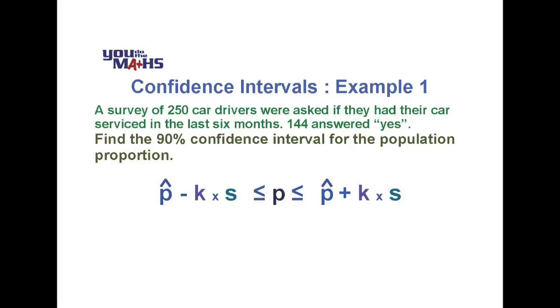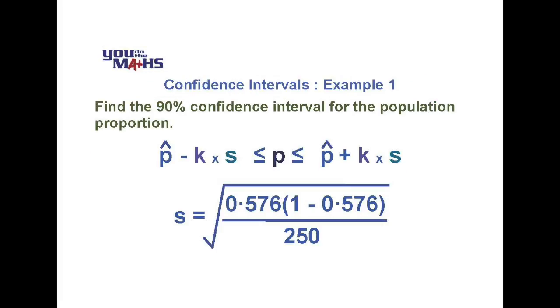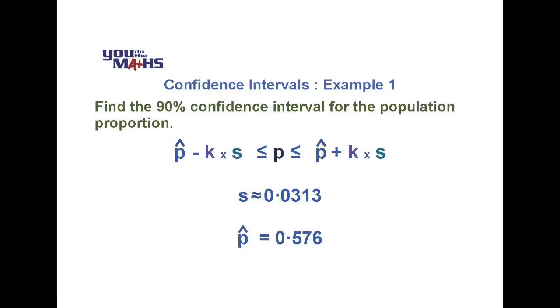Let's now calculate the standard deviation. Because we don't know the population proportion we'll use our sample proportion which is 0.576 and put that into the formula along with a sample size of 250. If we do that we get a standard deviation of 0.0313 and we know of course that p hat is 0.576.